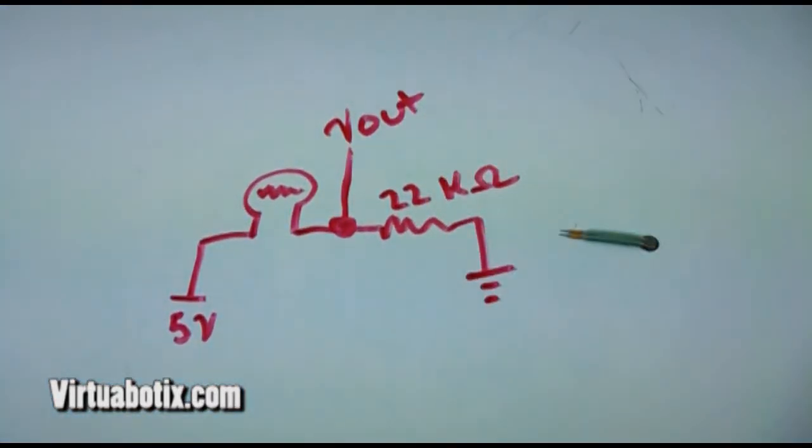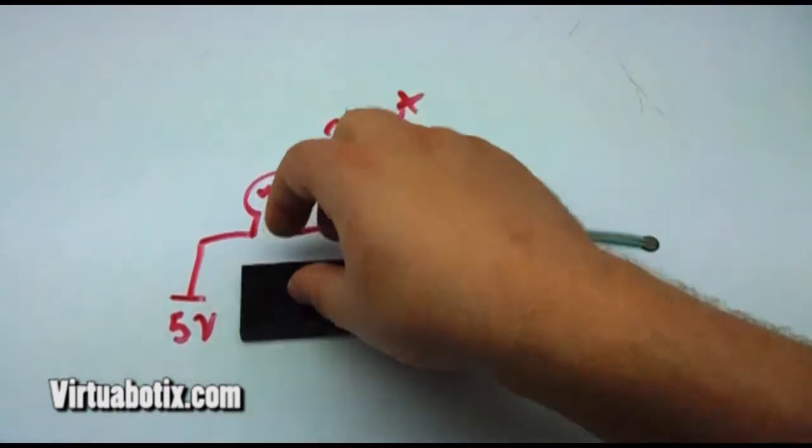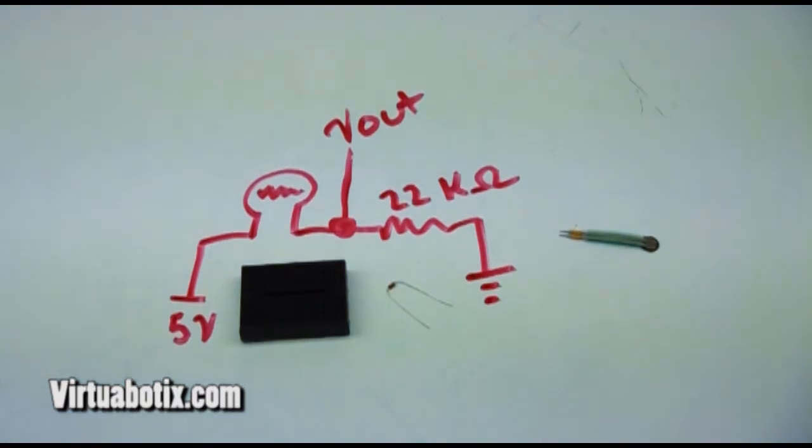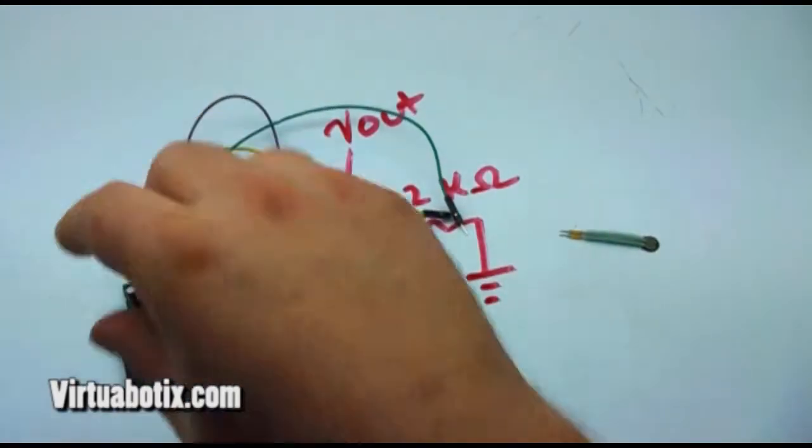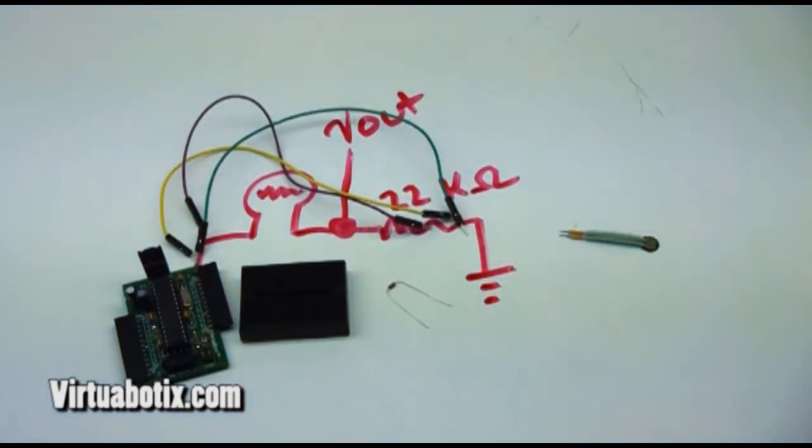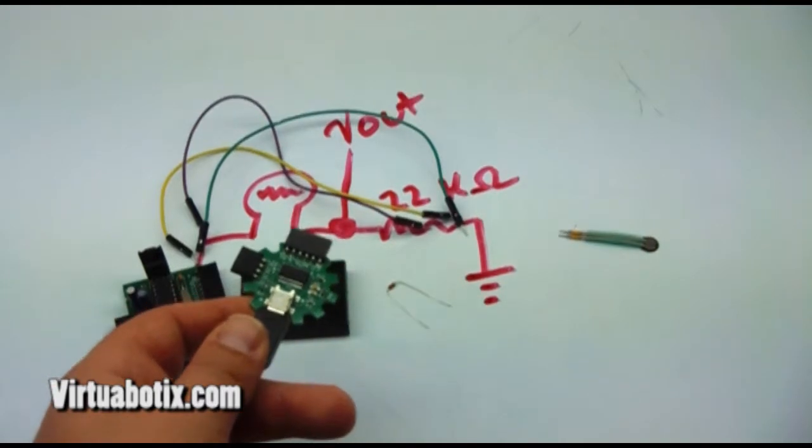We'll need a 22k ohm resistor, which is right here, and our breadboard, some jumper pins, our Versalino Uno, and the FTDI for programming it.